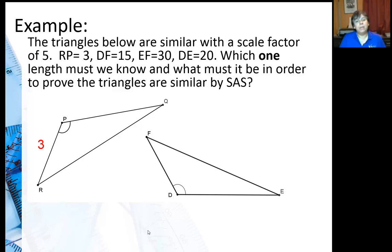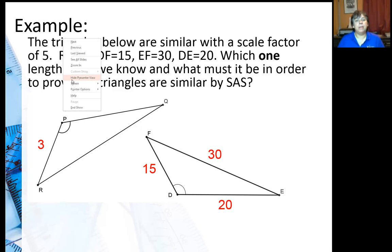I want to prove that these two triangles are similar by using side-angle-side. So I gave some values. I know RP is 3, DF is 15, EF is 30, and DE is 20. Which one length must we know, and what must it be in order to prove the triangles are similar by side-angle-side?